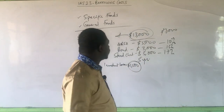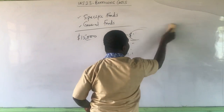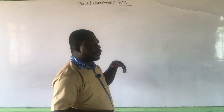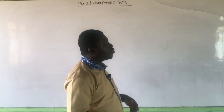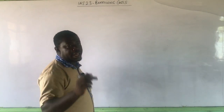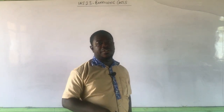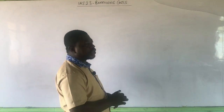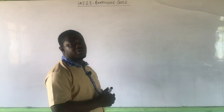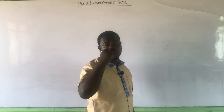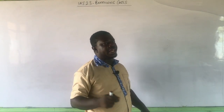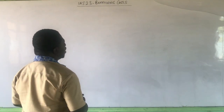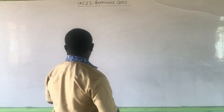Looking at the solution: we want to know how to treat the borrowing cost, but first we need to calculate it. We are told the cost of the qualifying asset — this is a qualifying asset because it takes two years to complete. The cost needed for construction is $20 million, but we borrowed a total of $22 million, meaning the extra $2 million is for working capital purposes and the borrowing costs associated with that will not be capitalized. Let us first find the weighted average cost of the borrowing.